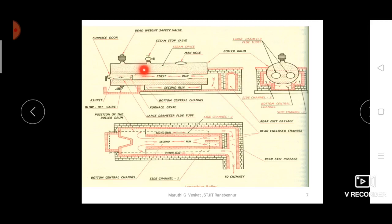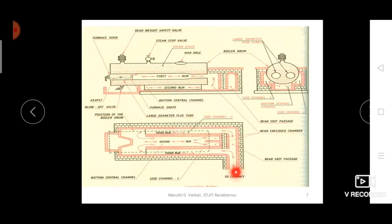The outside surface of the fire tubes is surrounded by water. At the end of these fire tubes, the structure is conical in order to increase the velocity of the hot flue gases. They then move through the side channels and finally exit through the chimney. When fuel is burned on the grate, hot flue gases are released, and the water surrounding the hot tubes absorbs heat and is converted into steam.